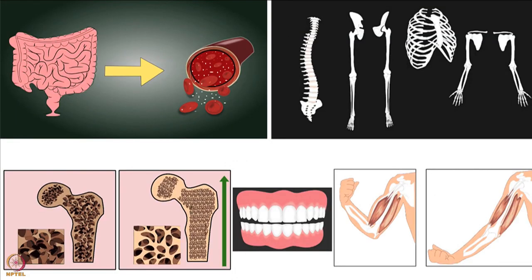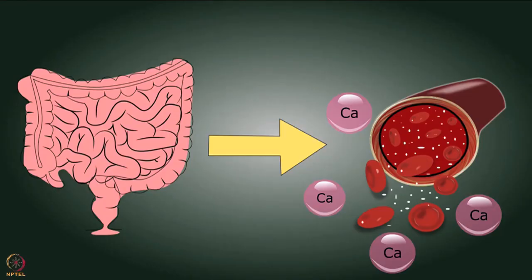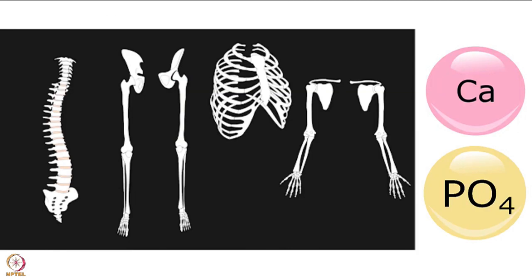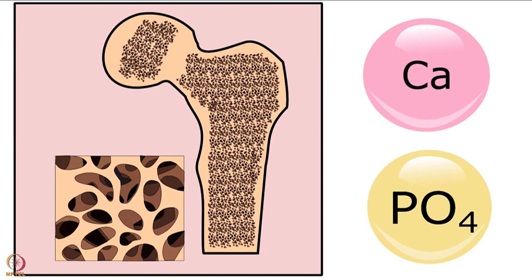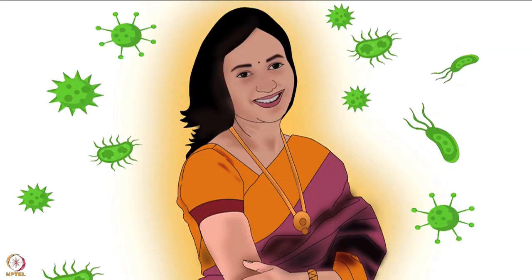Once activated, vitamin D plays several roles in the body. One major role is the formation and maintenance of strong bones. Another is absorption of calcium in the intestine and maintaining levels of calcium and phosphate in the blood, which are required for growth and repair of bones and maintaining correct bone density. Vitamin D also helps maintain strong teeth and muscles, and acts as an immunomodulator, helping control and support the immune system.